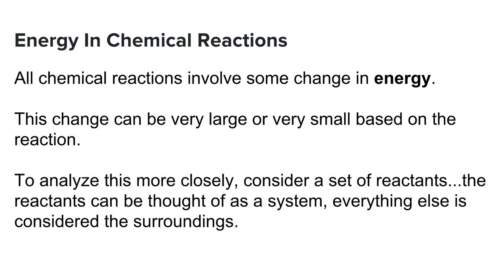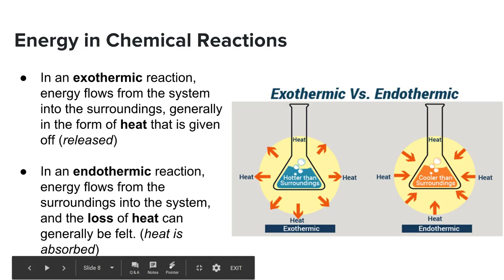Now the big one we're going to focus on is chemical reactions. All chemical reactions involve some sort of change in energy. This change can be large or small. It just depends on the reaction. We've seen big reactions and we've seen little reactions. Well let's look at a set of reactants. The reactants are thought of as a system with everything else considered the surroundings. There are two main types of chemical reactions, exothermic and endothermic.